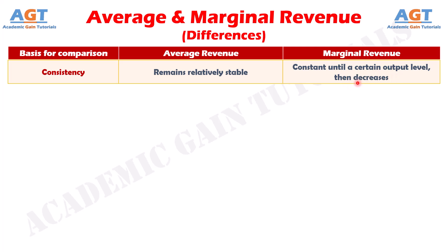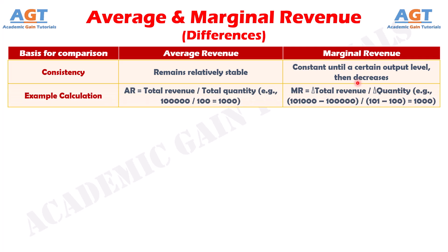Finally, difference number ten. For example, if a firm's total revenue for 100 units is 100,000 rupees, the average revenue would be 1,000 rupees per product. On the other hand, if the total revenue increases to 101,000 rupees for 101 units, the marginal revenue for the additional unit would be 1,000 rupees.